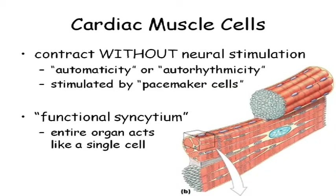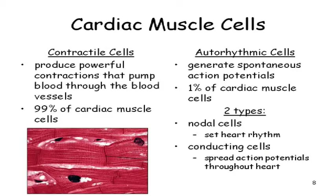Cardiac muscle cells do not have to have a signal from the nervous system — they are auto-rhythmic; they possess auto-rhythmicity. When you look at cardiac muscle cells, there are two broad categories. Most of the cardiac muscle cells are what we refer to as contractile cells. Their job is to contract, to pump the blood.